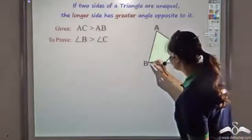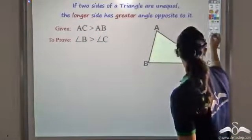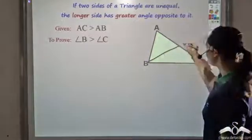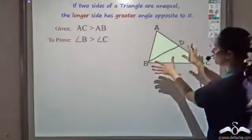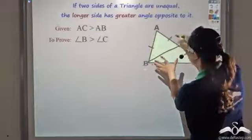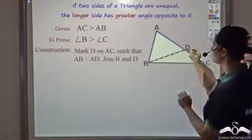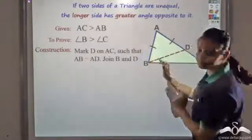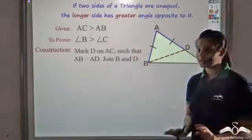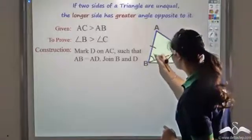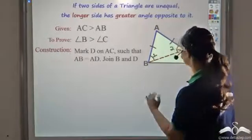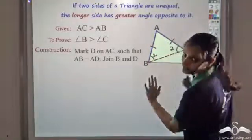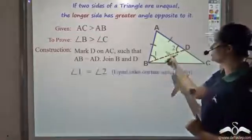To prove this, I draw a line from B to a point D on AC such that AB and AD become equal. Now AB and AD are two equal sides. Since equal sides contain equal angles, angle 1 would be equal to angle 2 — these are the angles in the triangle formed by the two equal sides meeting at A.